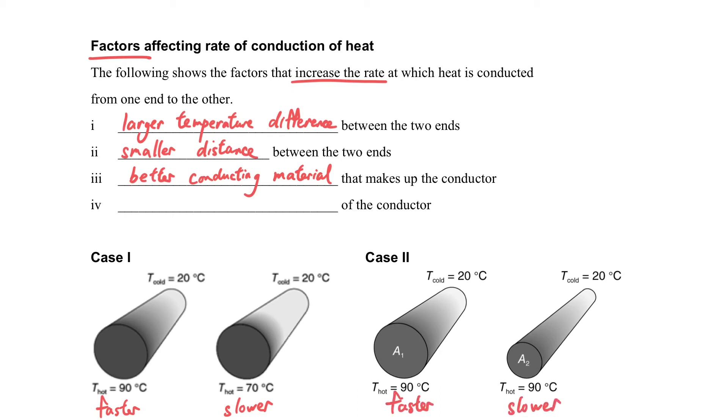If you consider the molecular arrangement, if the cross-sectional area is larger, actually more particles and more molecules are involved in the conduction process. So the larger cross-sectional area, the heat will transfer faster through conduction.